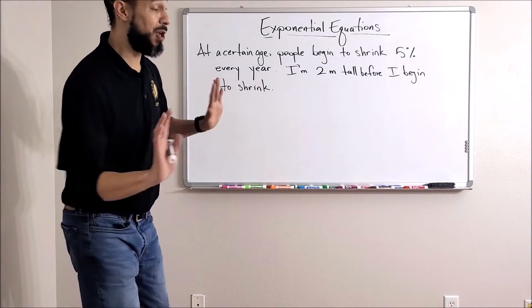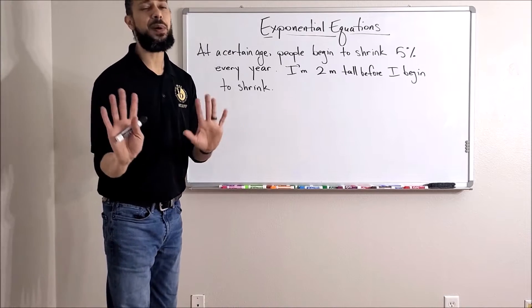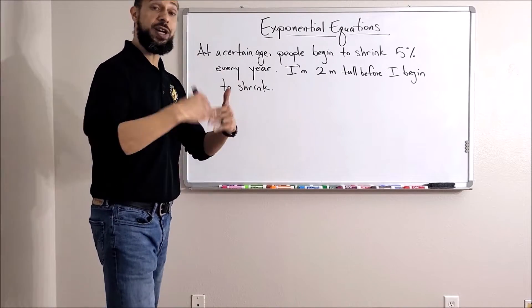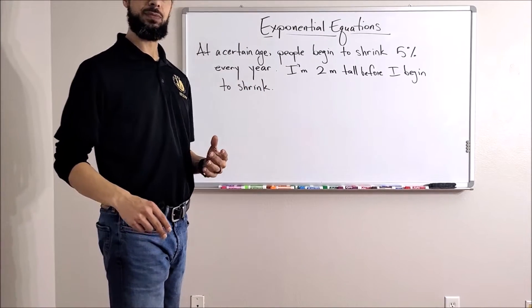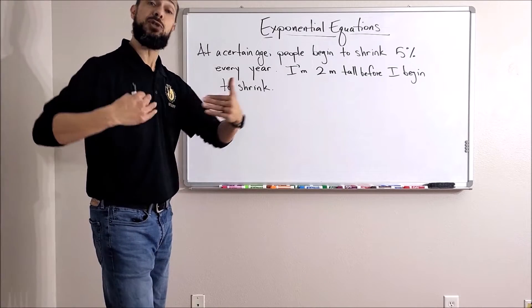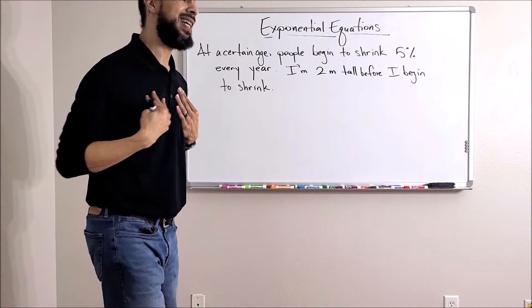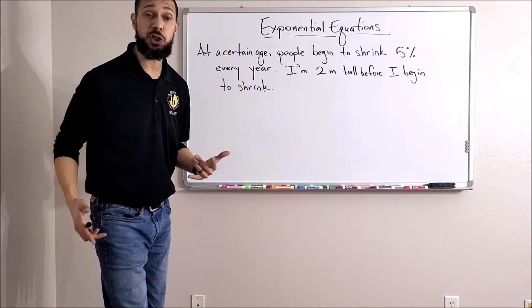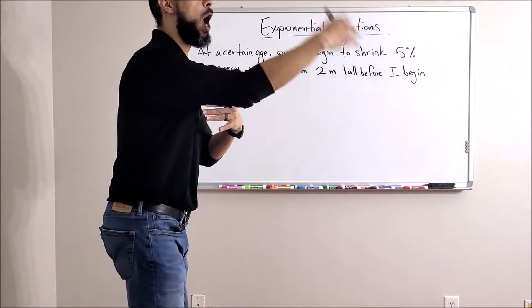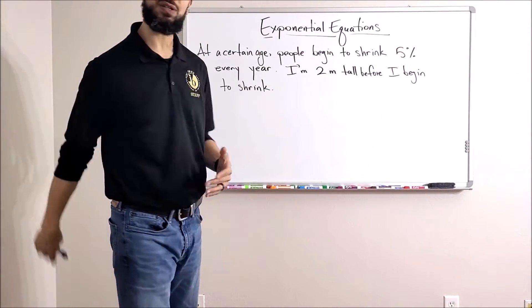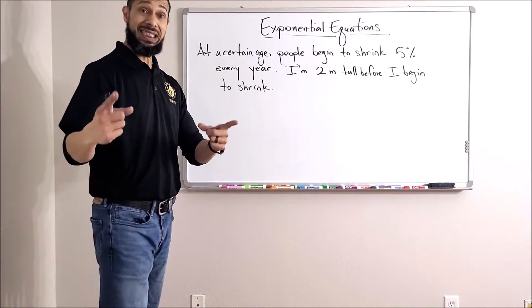Let's try one more. So let's say just for purposes of this problem that at a certain age people start to shrink, and before I start to shrink I'm two meters tall. Let's come up with an exponential equation so I can find out how tall I'll be after I start to shrink.